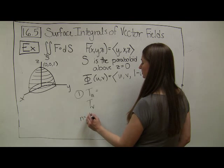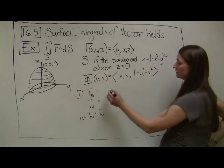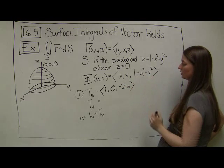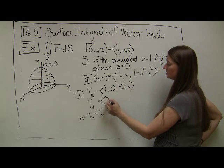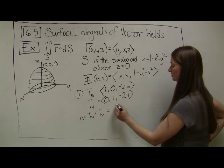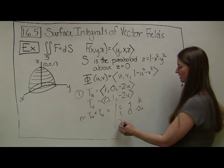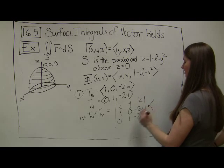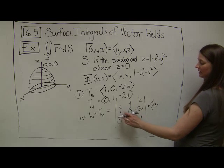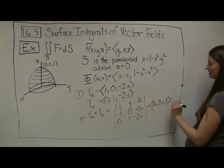These steps should start seeming familiar from the last section. The partial derivative with respect to u is (1, 0, -2u), since the rest are constants. Similarly, the partial derivative with respect to v is (0, 1, -2v). Setting up the cross product with i, j, k components: the i-component gives 0·(-2v) - (-2u)·1 = 2u, and the j-component gives -(-2v) = 2v.